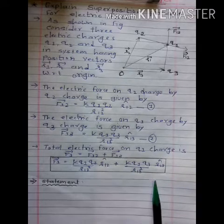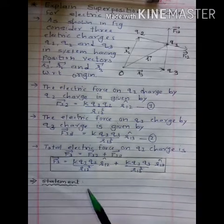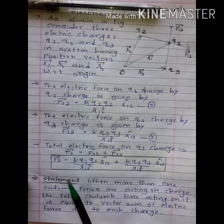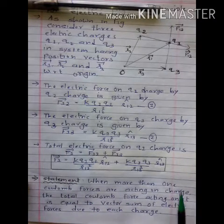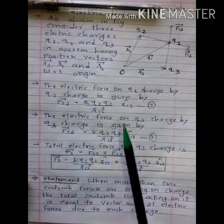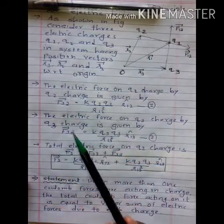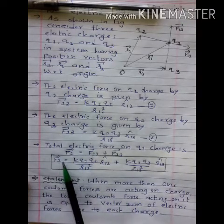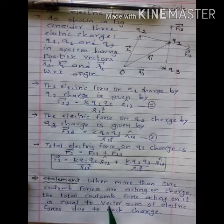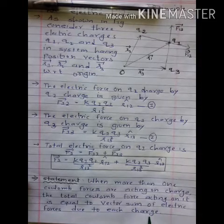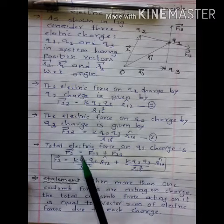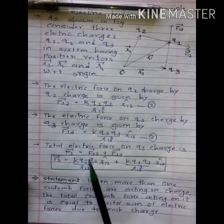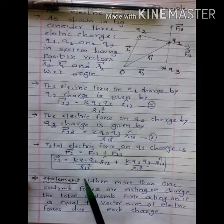This statement is nothing but the superposition principle. Statement of superposition principle: when more than one Coulomb forces are acting on a charge — in this system we considered two Coulomb forces, F12 and F13 — the total Coulomb force vector F1 acting on it is equal to the vector sum of electric forces due to each individual charge. This is called the superposition principle.